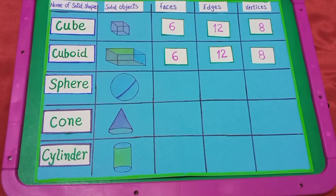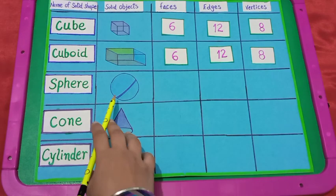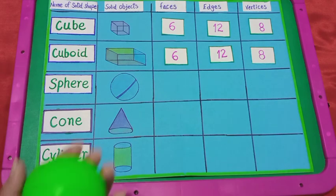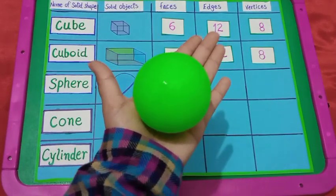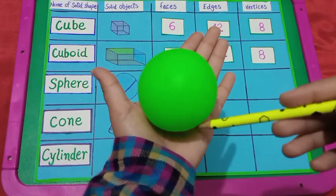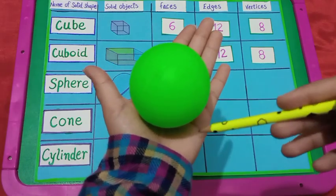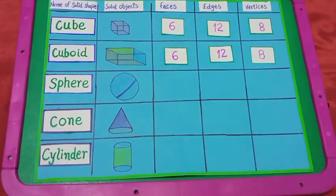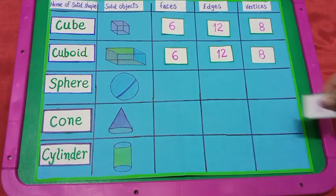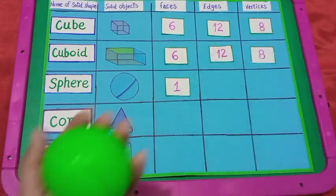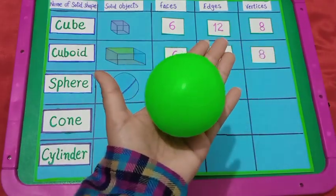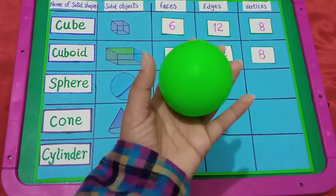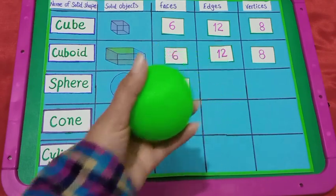Next shape is sphere. Dear students, this ball is like a sphere. It has only one face which is called curved face. It has no edge and no vertices.